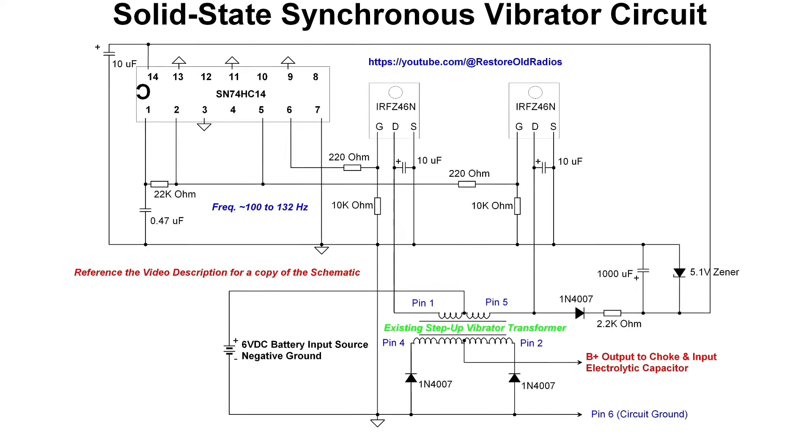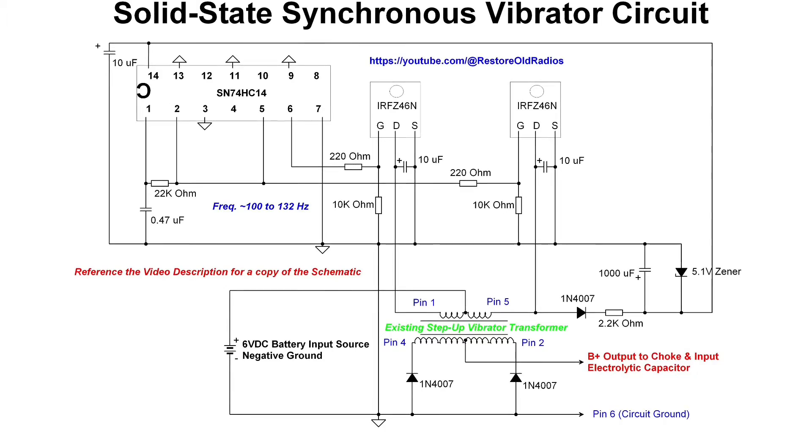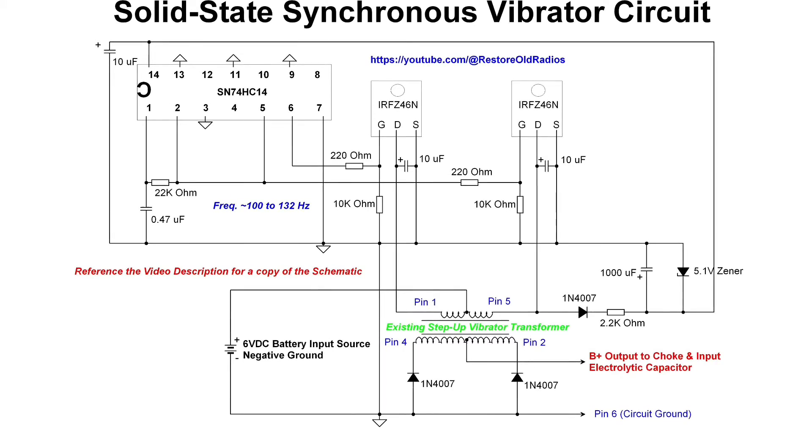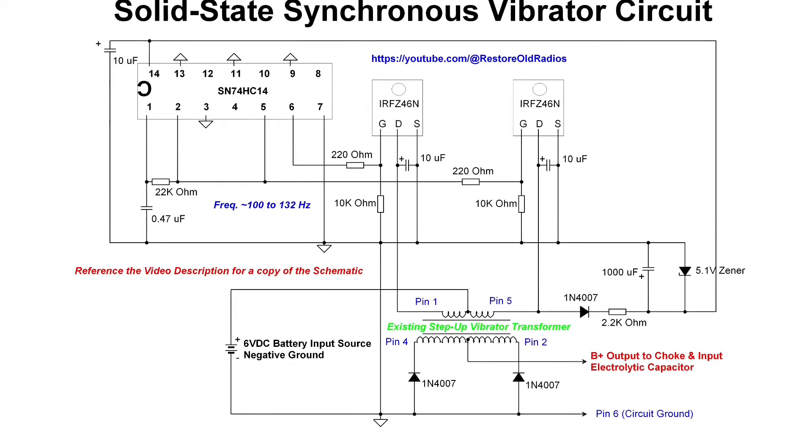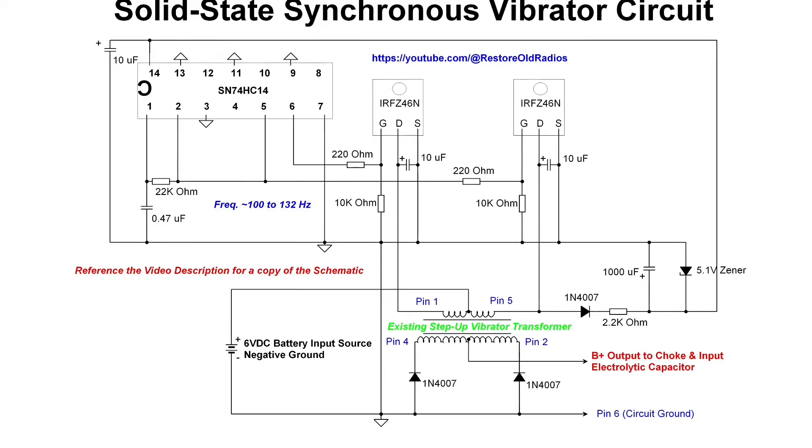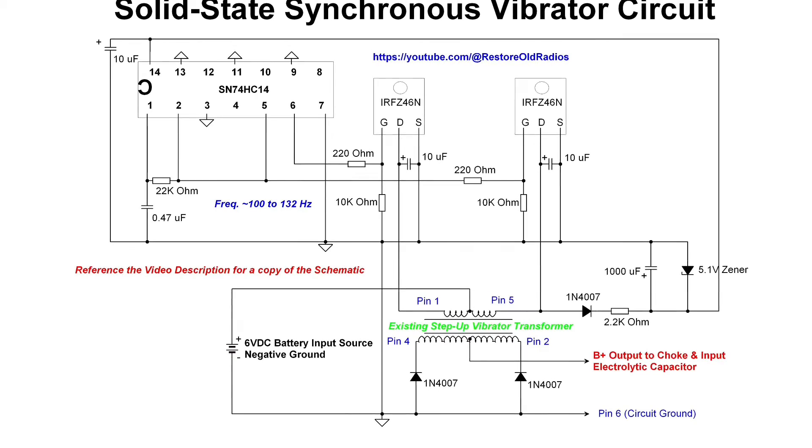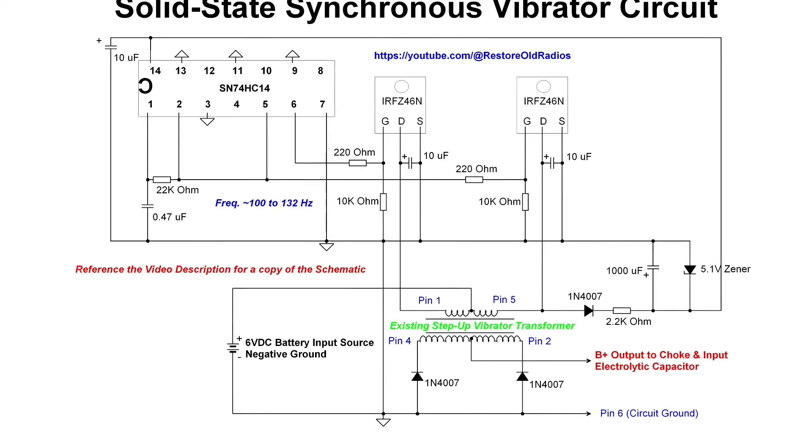In addition, the frequency, just based on some breadboarding and doing a quick mock-up, based on the components that I have selected—the 0.47 microfarad and the 22k ohm resistor—places the square wave output for both channels between 100 and 132 hertz.